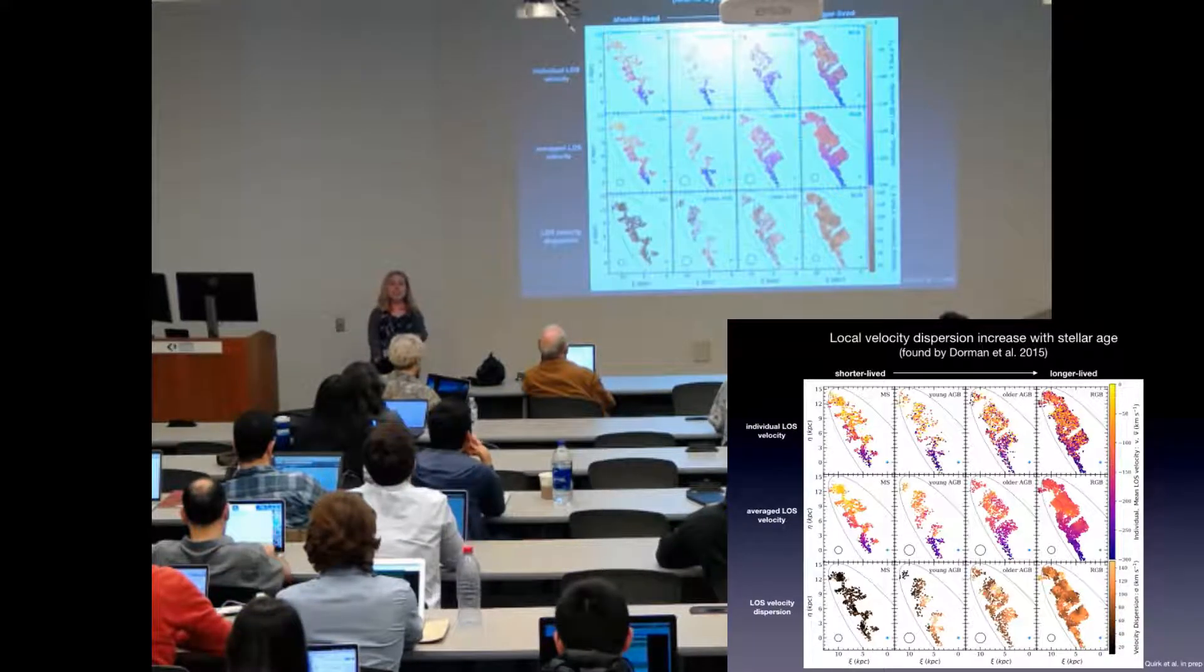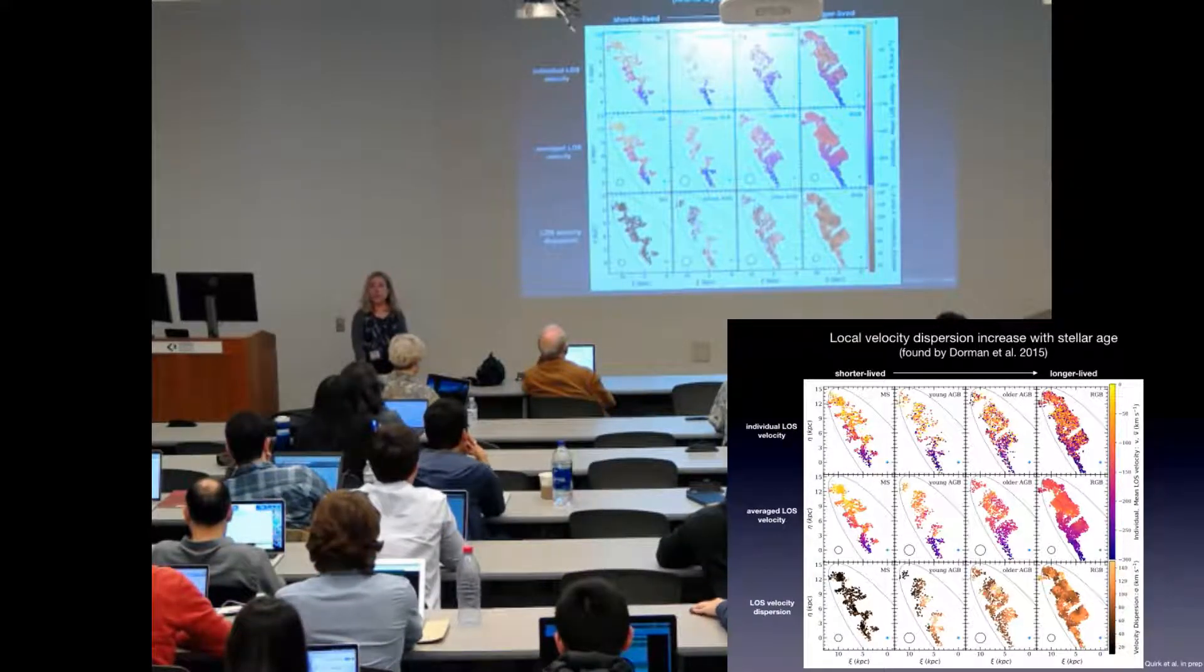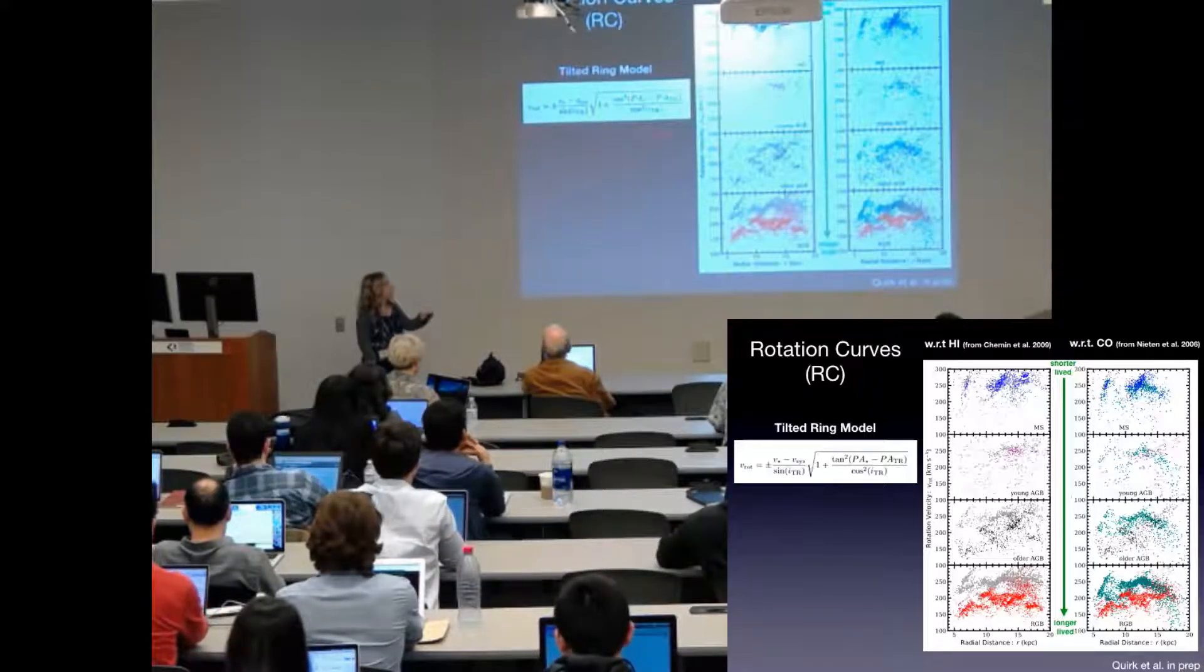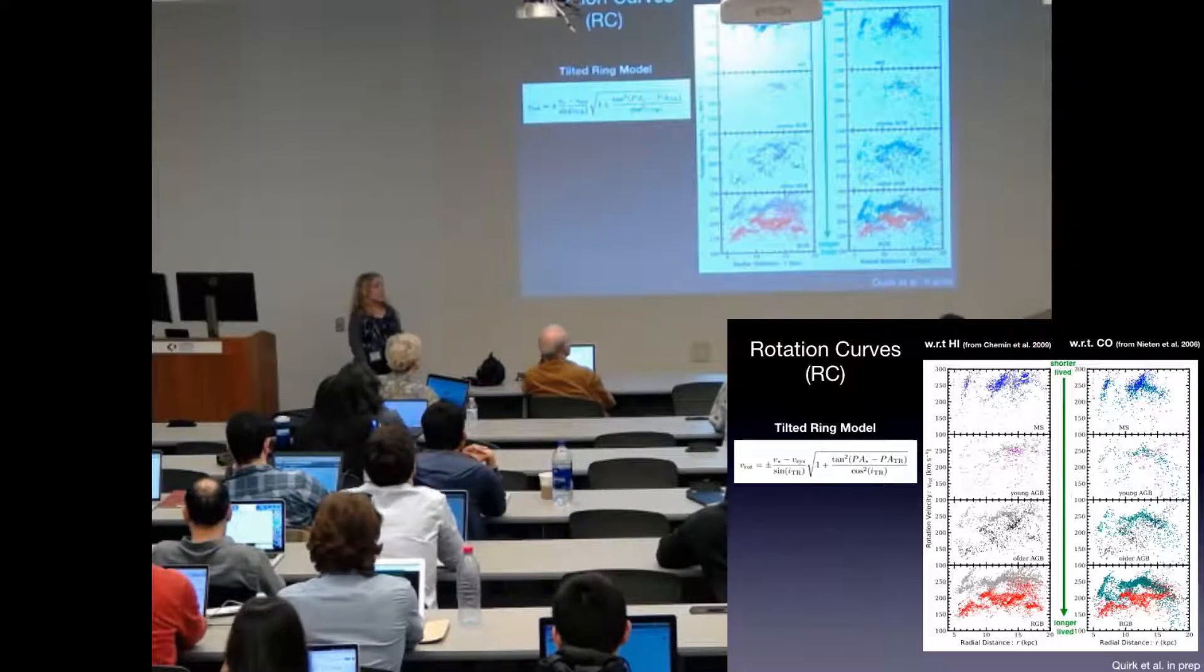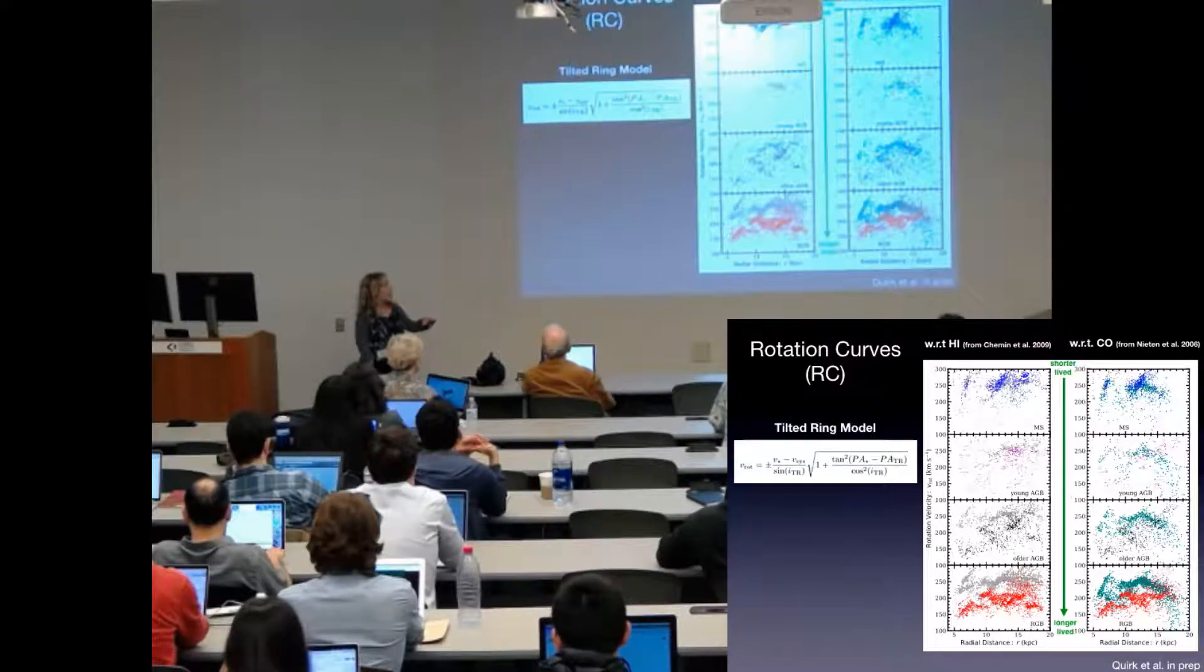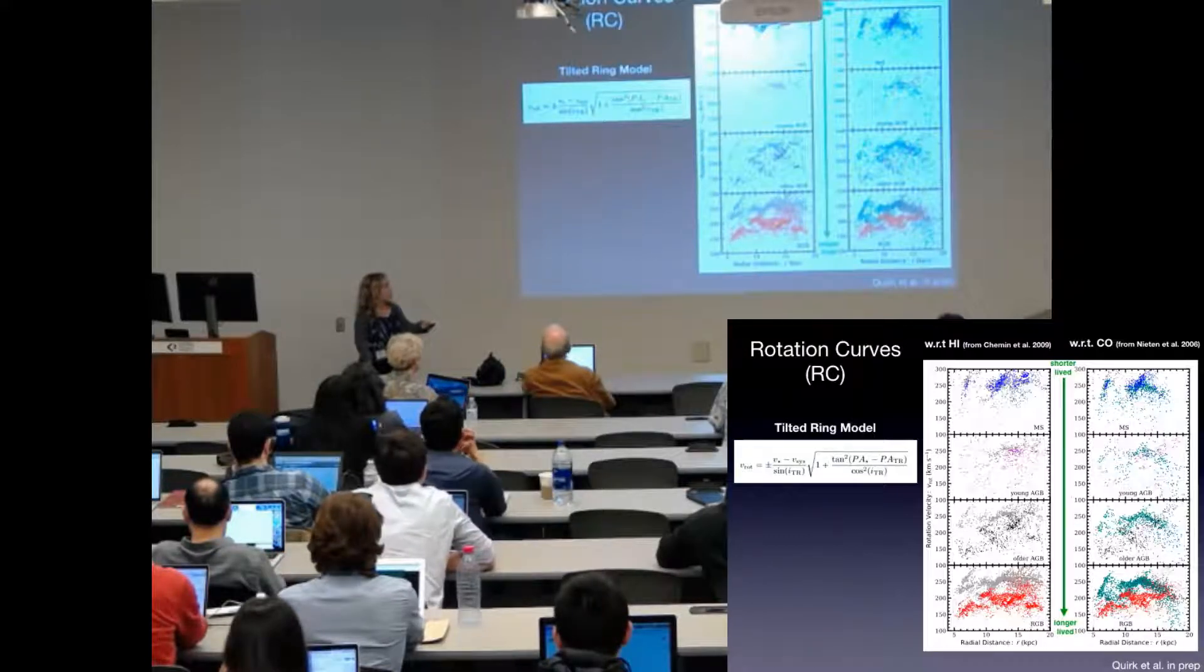I've deprojected these line of sight velocities into rotation velocities using the tilted ring model shown here to create rotation curves. In each of these sets of rotation curves, the top panel is the shortest-lived main sequence stars, then young AGB, older AGB, and the longest-lived RGB stars.